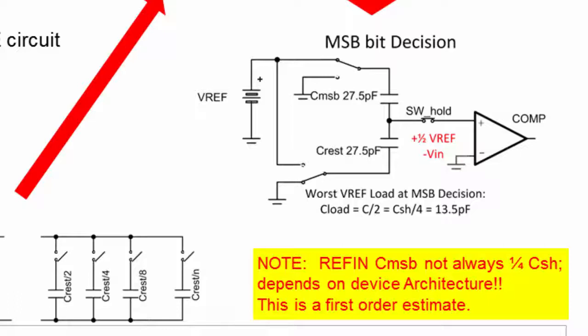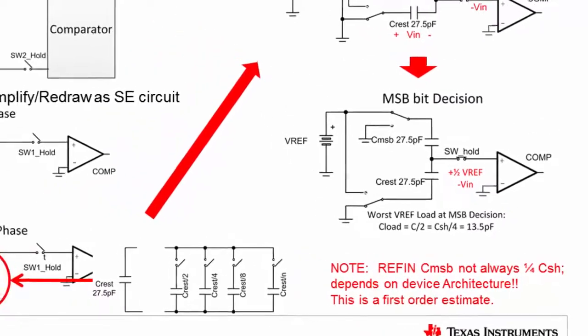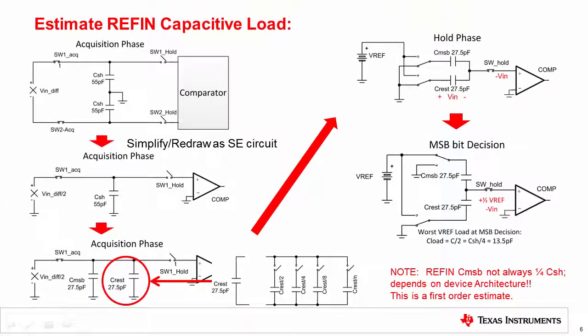It is important to note that the worst case load is not always the sample and hold capacitance divided by 4, but can be dependent on the device architecture. This model will approximate the reference loading by repeating the MSB decision multiple times, creating a worst case type model. Creating a model that fully considered all of the different capacitors in the array would be very complex and would potentially have convergence issues. This simplified worst case model will work well for confirming the reference settling, and the SPICE simulation will converge much more quickly than a more complex model.